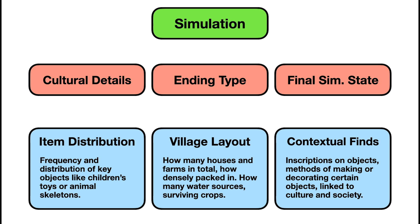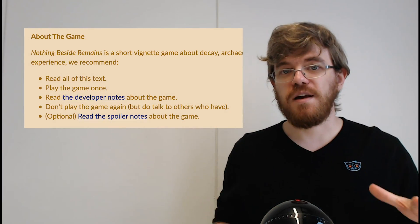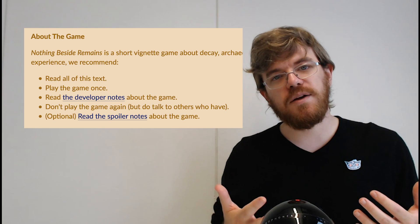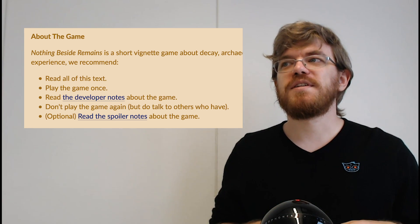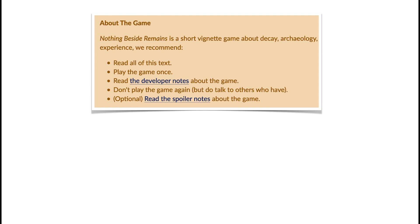Finally, there's contextual information on objects. When you bump into an object in the game, a text box pops up with a description — a mix of completely static text, dynamically generated text, and contextual text. The contextual text draws information from the simulation. For example, if the villagers believed a particular number was lucky, when you look at certain objects you might find that number incorporated into their design. When I released the game, I asked players to only play it once and encouraged them to read about it afterwards and talk with others — I wanted to see what happens if people are only exposed to one output from a generator.